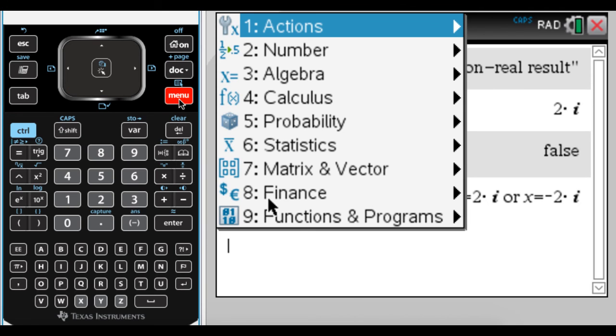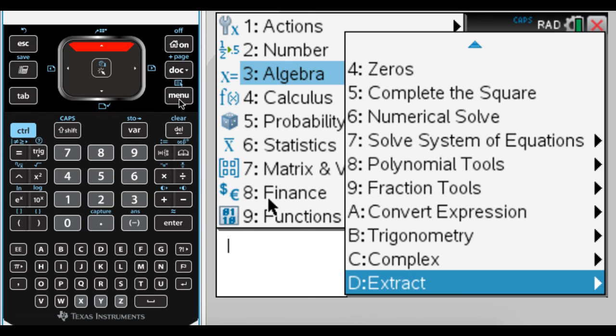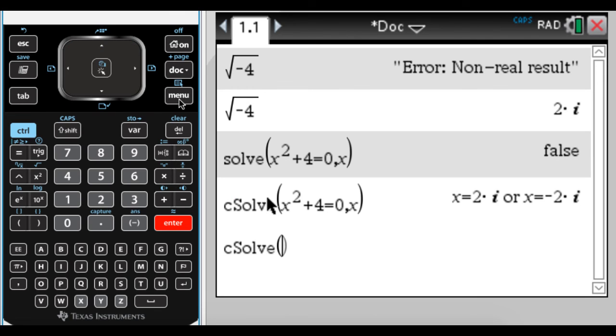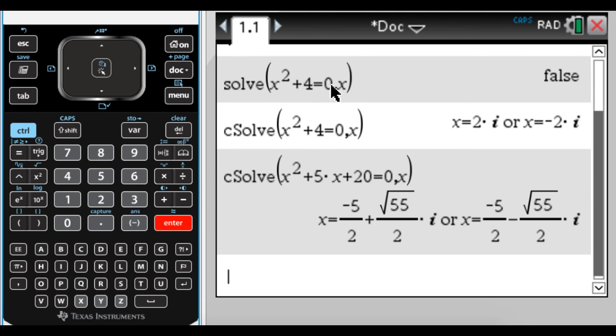So if I do another example, so it's menu 3, and I usually press up, go to complex, go to solve, and let's do, I don't know, x squared plus 5x plus 20 equals 0, x. And there you go. It's giving you, so it gives you the complex solutions that you would get. If you use quadratic formula, you would get those values.